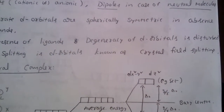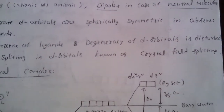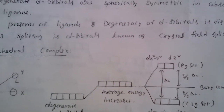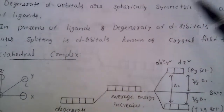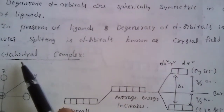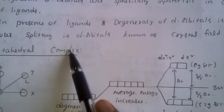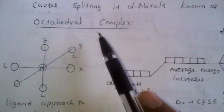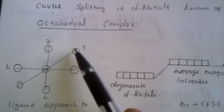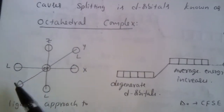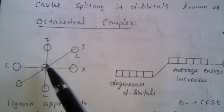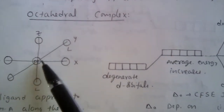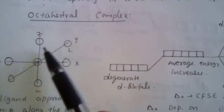Crystal field splitting occurs in different types of complexes: octahedral, tetrahedral, and square planar complexes. In an octahedral complex, six ligands are present. These six ligands approach the central metal atom and form ionic bonds along the axes.